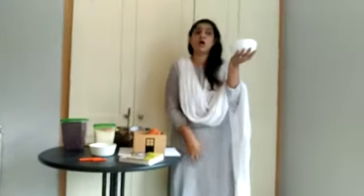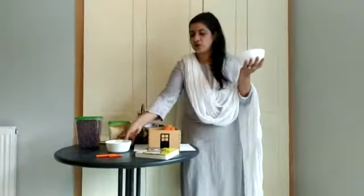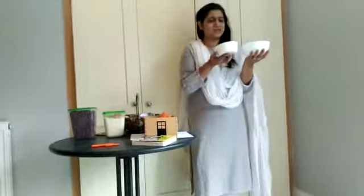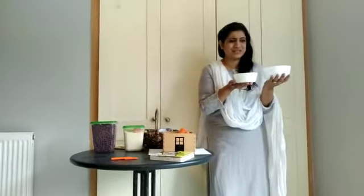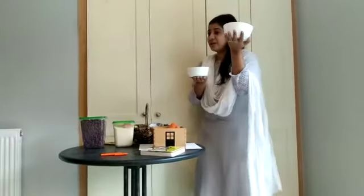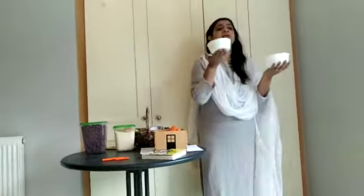This is a big bowl and this is a small bowl. This is a big bowl and a small bowl. So big and small — they are opposites. Now let's see what the next opposite is.